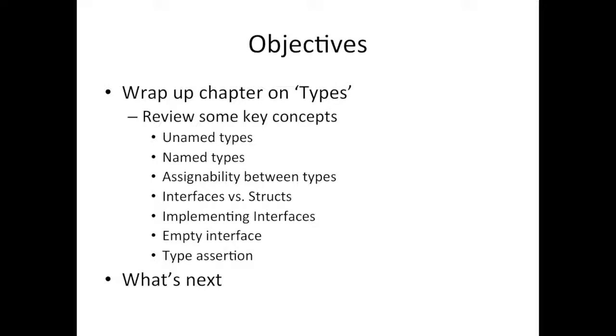So those are some of the key highlights from this chapter. So what are we going to do next? Now that we understand and play with types quite a bit and learned how to implement interfaces, in the next chapter I'm going to be covering two interfaces from the Go standard library, and that's the IO reader and IO writer.